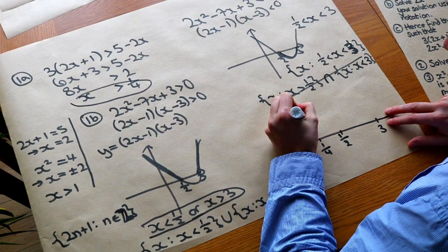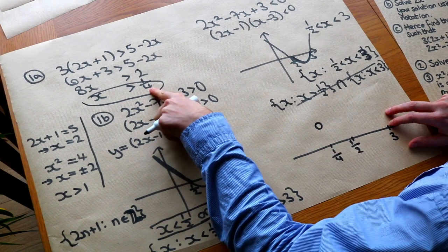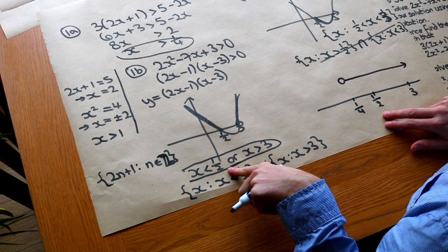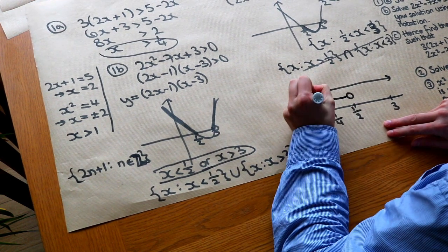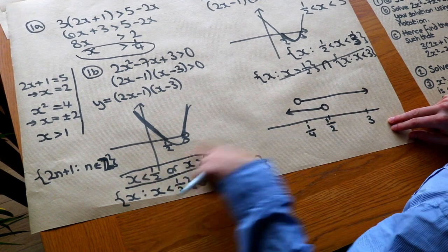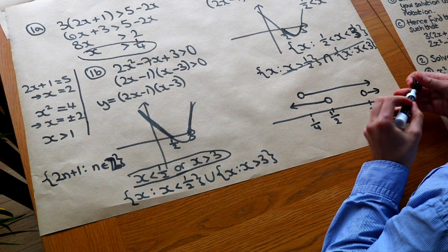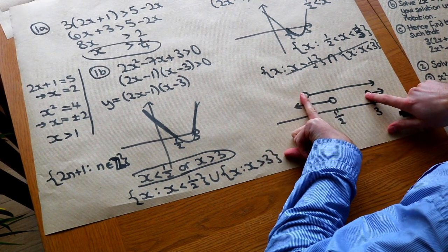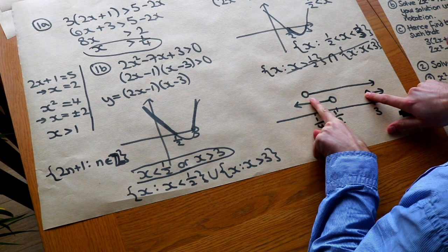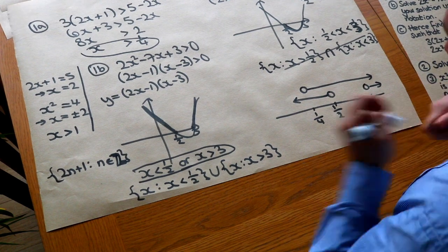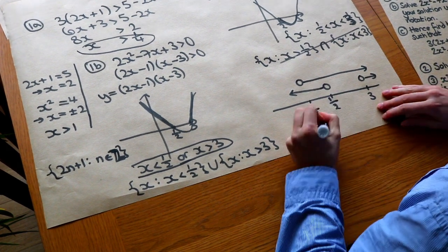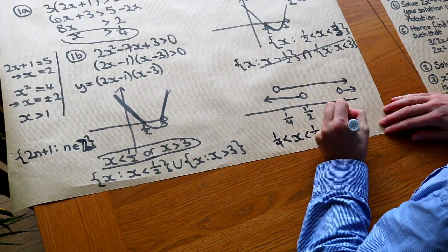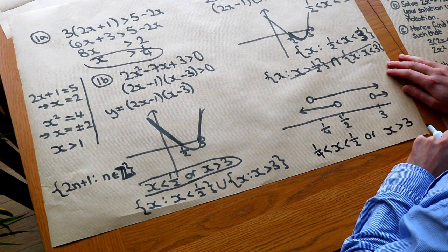Scanning across, we need to be on both lines simultaneously. Between 1/4 and 1/2 we're on both lines, so x can be between 1/4 and 1/2. After x = 3 we're also on both lines, so x > 3 is also a solution. The combined solution is: 1/4 < x < 1/2, or x > 3.